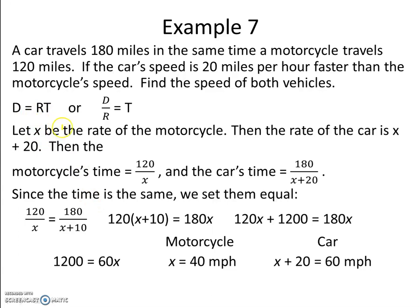But we actually want to know the time. So distance divided by rate equals time, which comes from dividing both sides of the equation by the rate. Let x be the rate of the motorcycle.